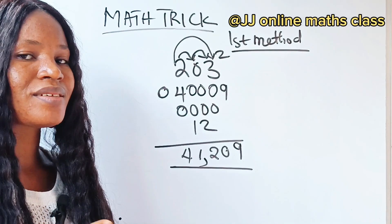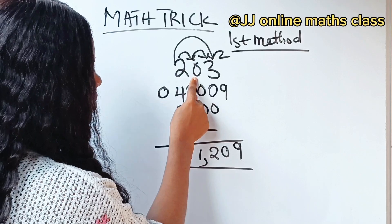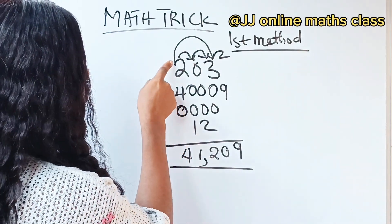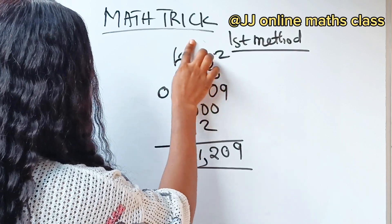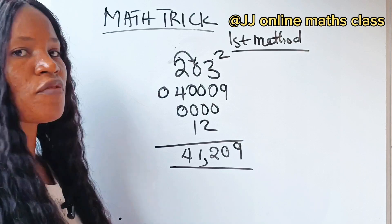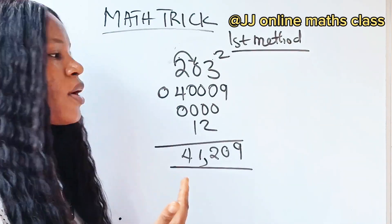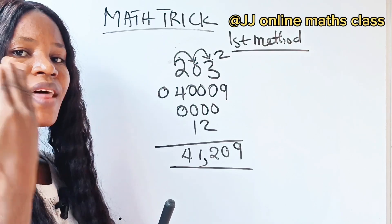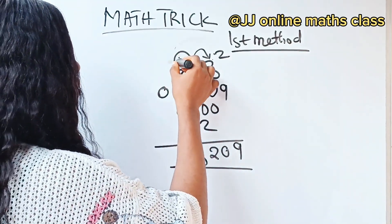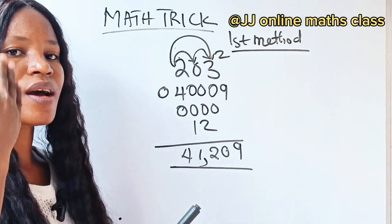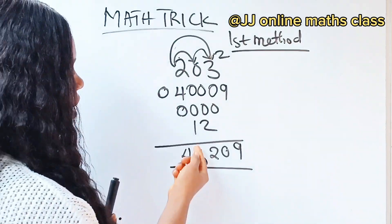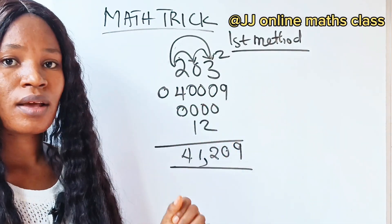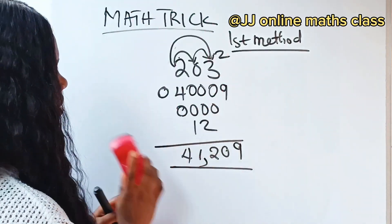Let me explain the first method again. I squared three and got zero nine. I squared zero and got zero zero. I squared two and got zero four. Then two times zero gave us zero, and double of zero is zero — that's why I wrote zero zero. Then zero times three is zero, and double of zero is still zero. Then two times three: two times three is six, and double of six is twelve, so I wrote twelve. Then we added everything and got 41,209. If you still don't understand this, you need to watch the previous video where I explained it in detail.